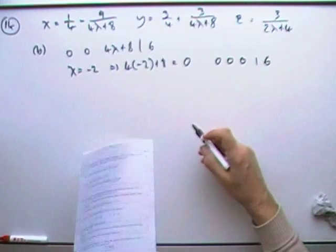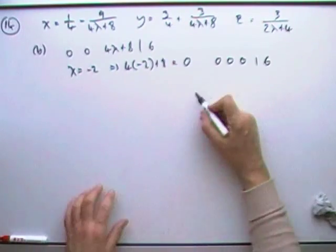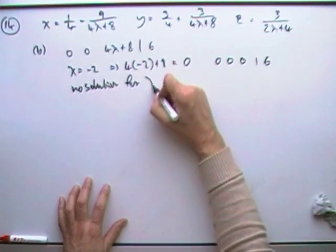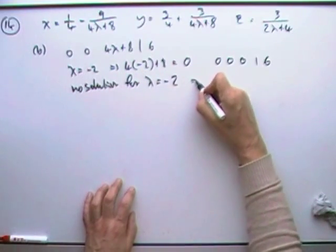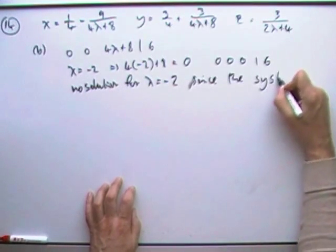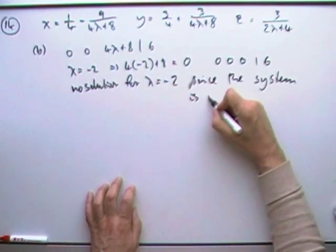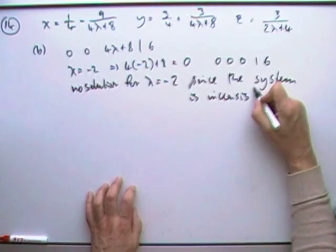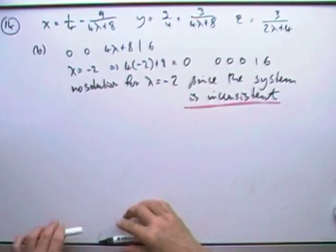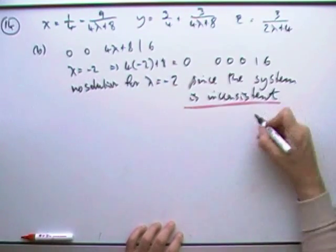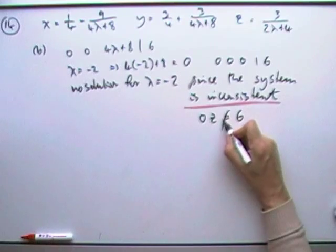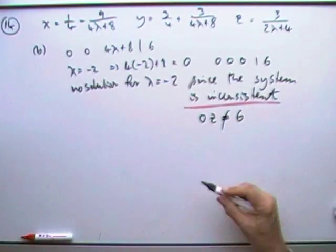So it's going to have an inconsistency, there'd be no solution. There'd be no solution for λ is -2, because the system is inconsistent. That's probably the key word that will give you the mark. Inconsistent, because you can't have 0 times something equal to 6. 0 determines anything must be 0. It's inconsistent for that reason.